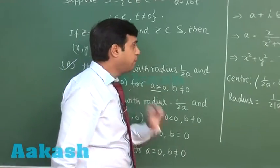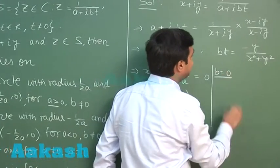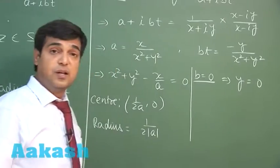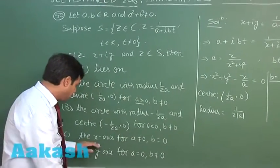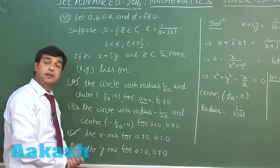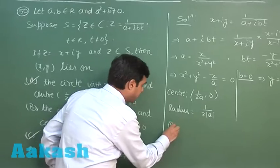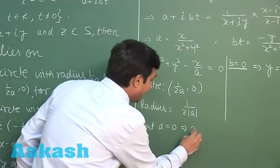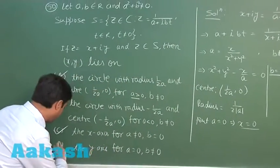Let us put b = 0 in this equation. When we put b = 0, we find simply y = 0. So with b = 0 and a as non-zero, we get the x-axis. When we talk about a = 0, we obtain x = 0.